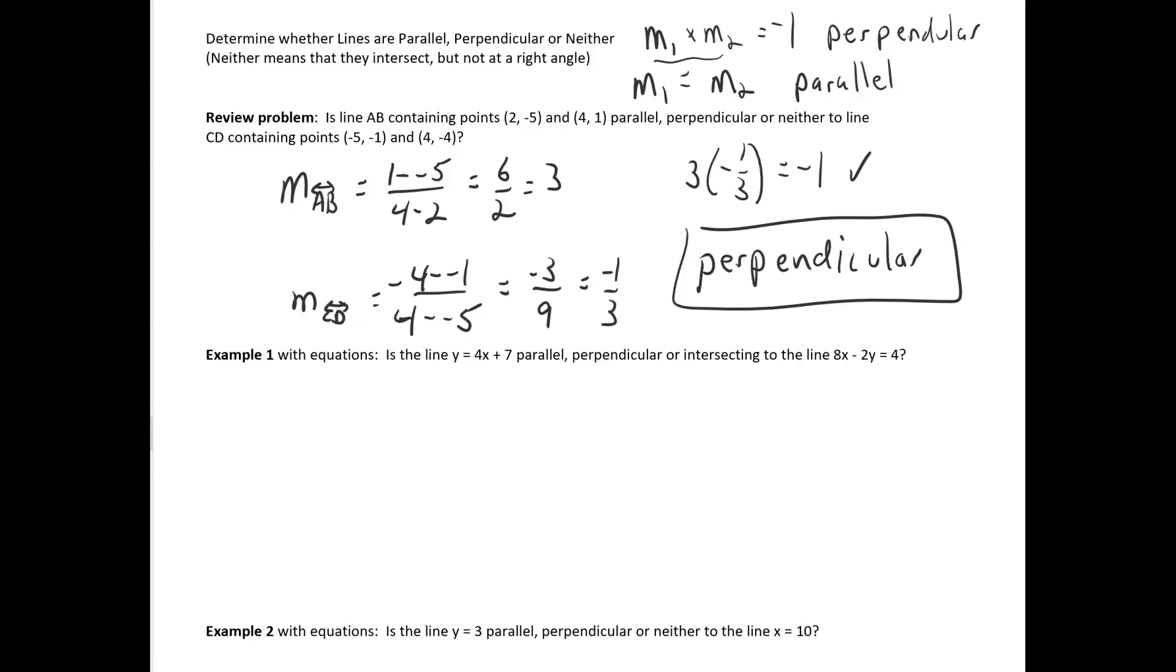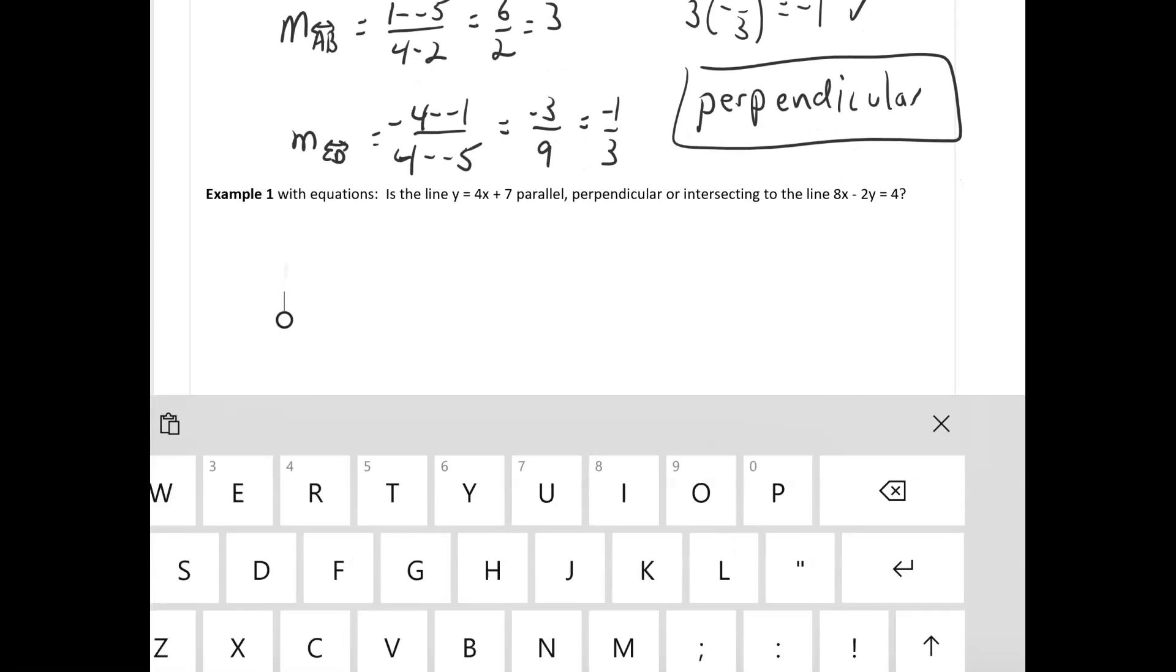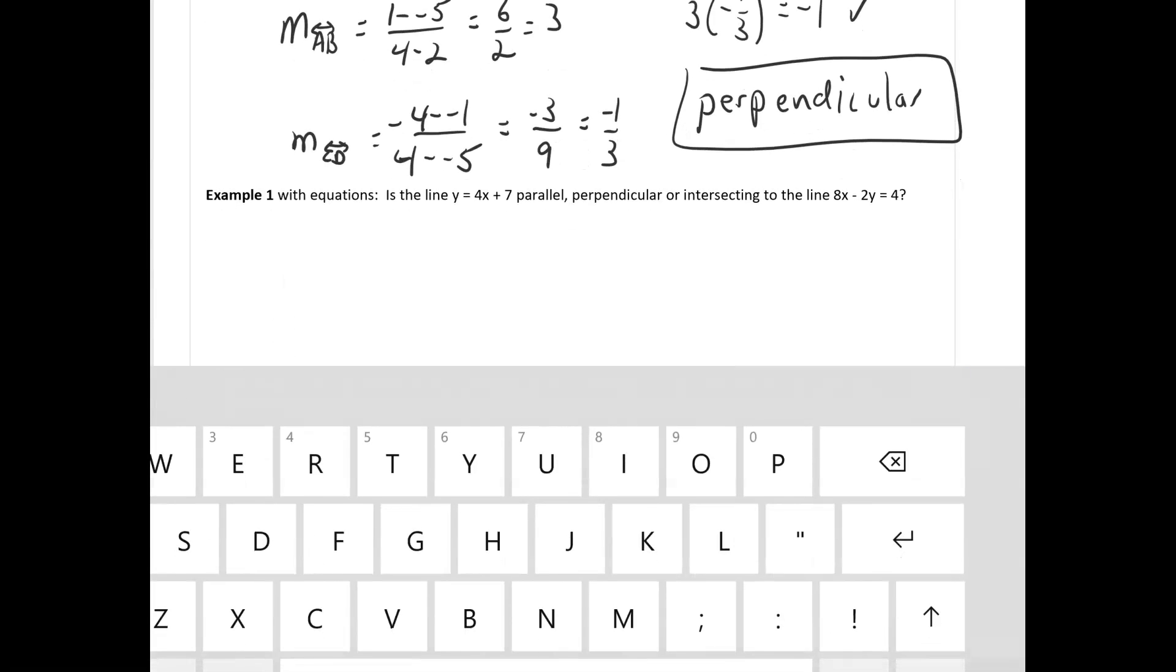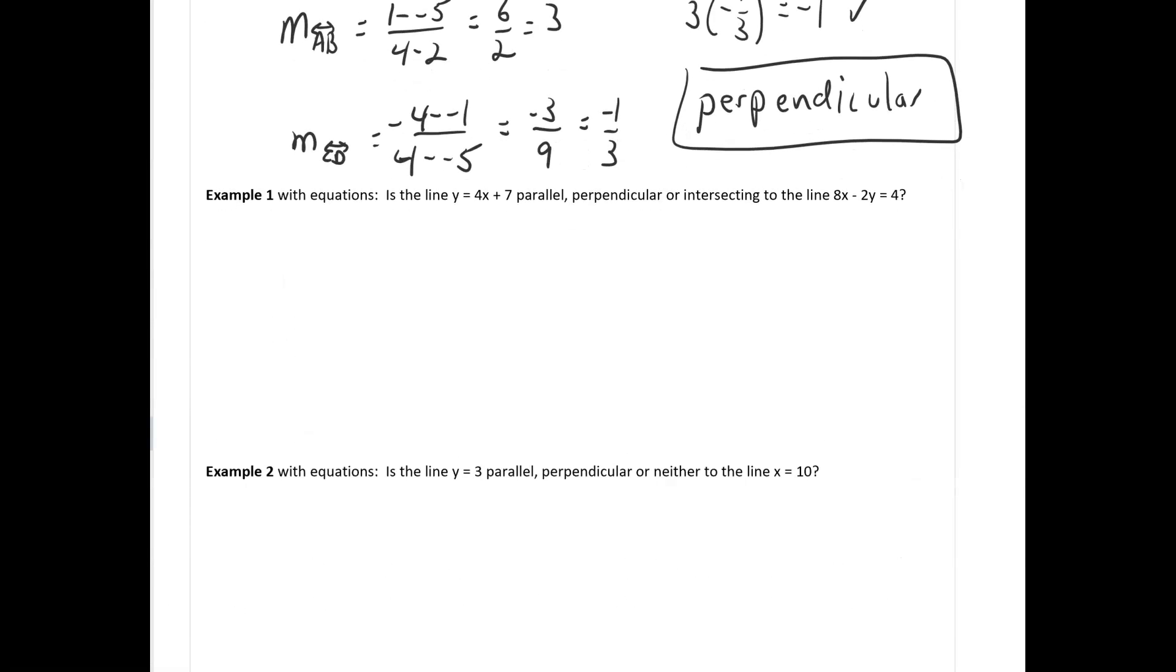Let's look at an example with equations now. So let's say we're given two equations. With equations, you have to find slope by putting it into slope-intercept form. At least that's the way we're going to do it. So this first equation is already in the form Y equals MX plus B. Once we have it solved for Y, and we have it in the form Y equals MX plus B, the slope just sits there, and we just have to find it and recognize it. So in this case, for the first line, the slope is 4. M equals 4.